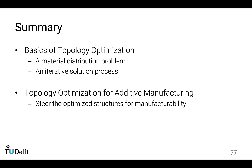To summarize the lectures about topology optimization, we are mostly focusing on two aspects: the basics of topology optimization and topology optimization for additive manufacturing. About the basics, topology optimization optimizes the material distribution and it is an iterative process. For topology optimization for additive manufacturing, we focus on how to steer the optimized structure for manufacturability such that no post-processing is required — this concerns the overhang and the design of infill structures.